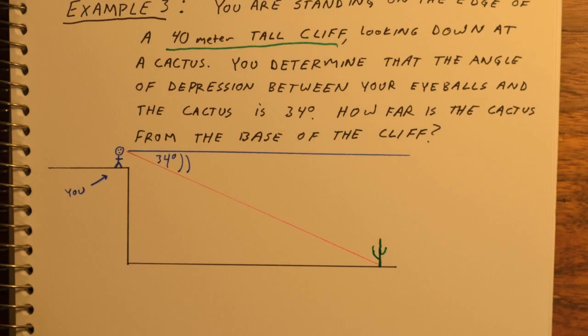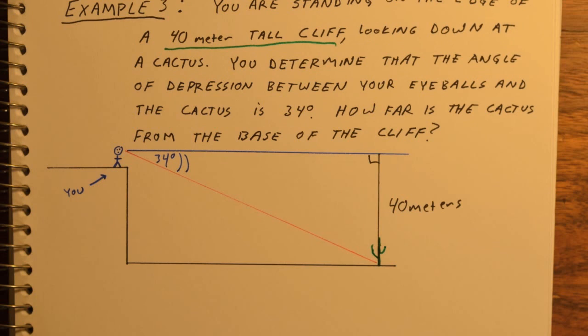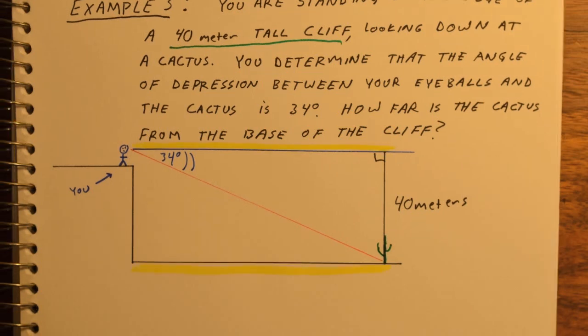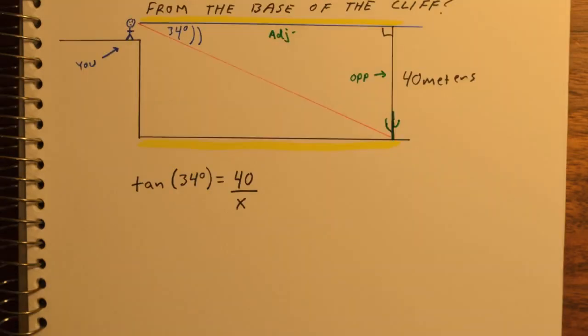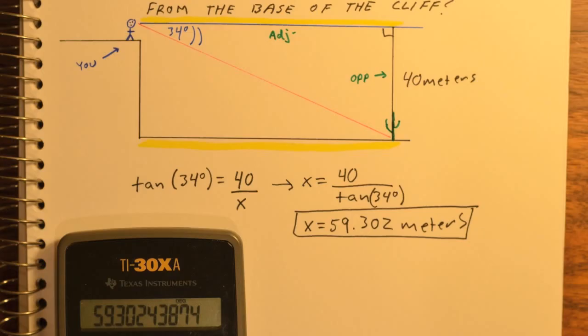How far is the cactus from the base of the cliff? If we create a right triangle, we know the cliff is 40 meters tall, so the altitude from the horizon line to the cactus is 40 meters long. Since the two highlighted lengths are congruent, we can find one using trigonometry. The opposite is 40, we want to find the adjacent. So tan(34°) = 40/x, which means x equals 40 divided by tan(34°). We get that x is 59.302 meters. Therefore, the cactus is that many meters away from the base of the cliff.